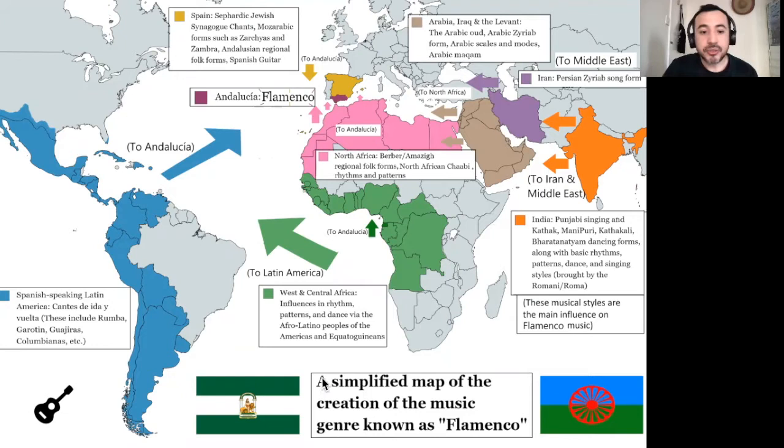So I found this map — I'll share it with you. This map actually shows us and gives us an idea of all the corners in the world that have helped shape what we call nowadays flamenco. Asia, of course, played a big role, from India to the Middle East through Iran, and also Africa.